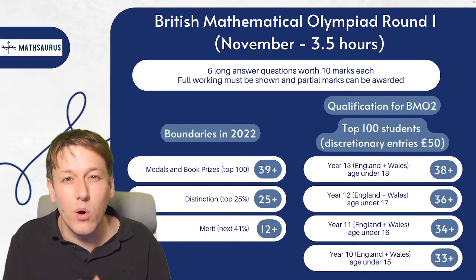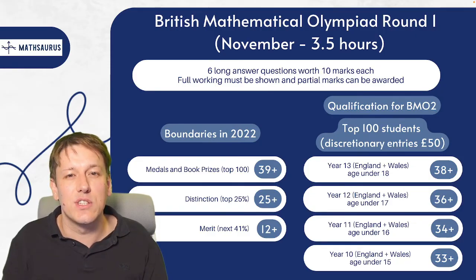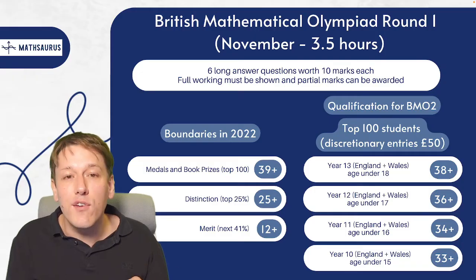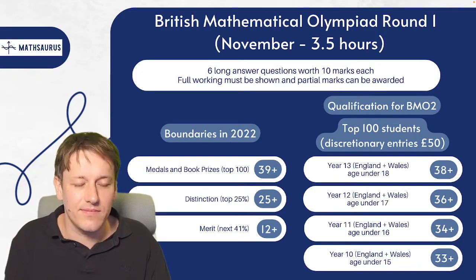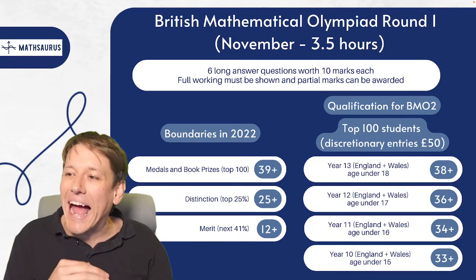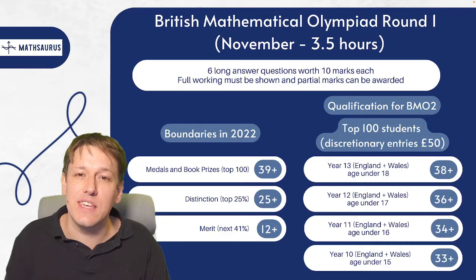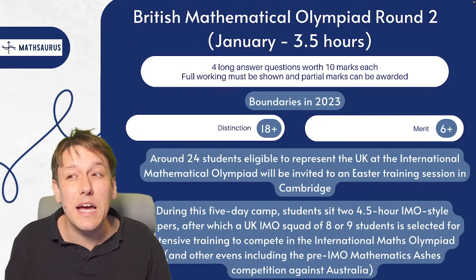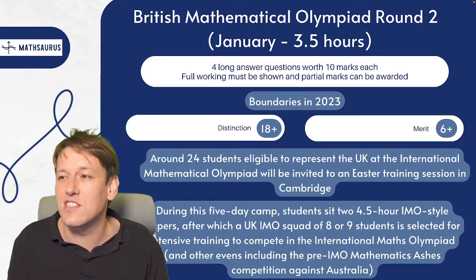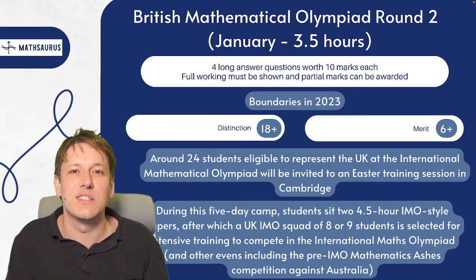Medals and book prizes go to the top 100 students nationally in BMO round one. BMO round one also feeds into selecting people for the national maths team for the International Maths Olympiad. The top 100 students roughly will be automatically given entry to BMO round two, with discretionary entries also available. BMO round two happens in January — four long-answer questions worth 10 marks each in three and a half hours — really tough questions. Last year's boundaries for merit and distinction were just 6 and 18 out of 40, showing how very tough these problems are, given that these are already the top 100 students in the country.